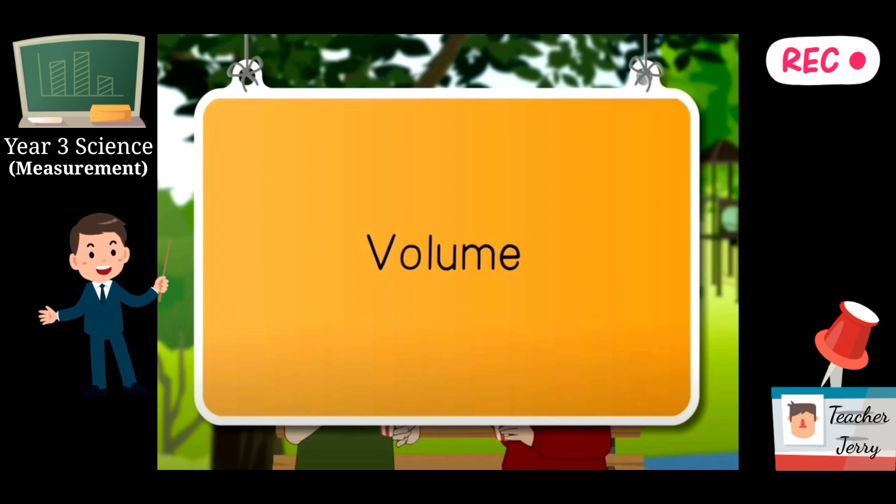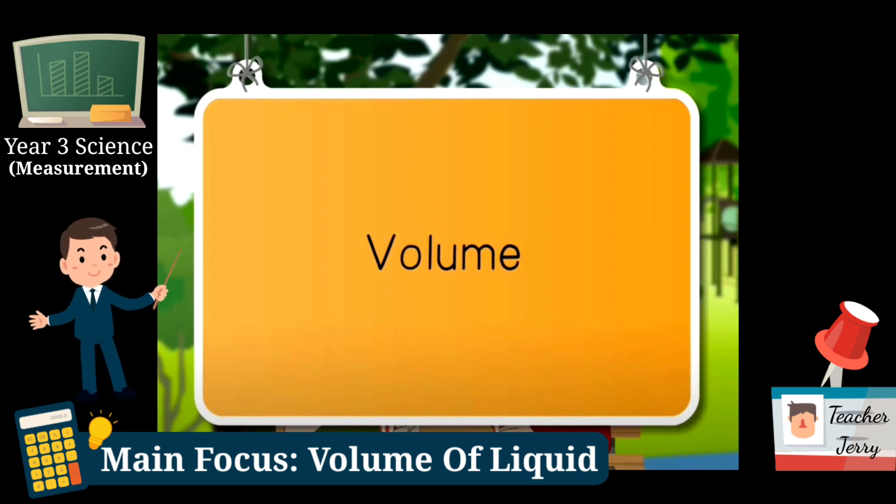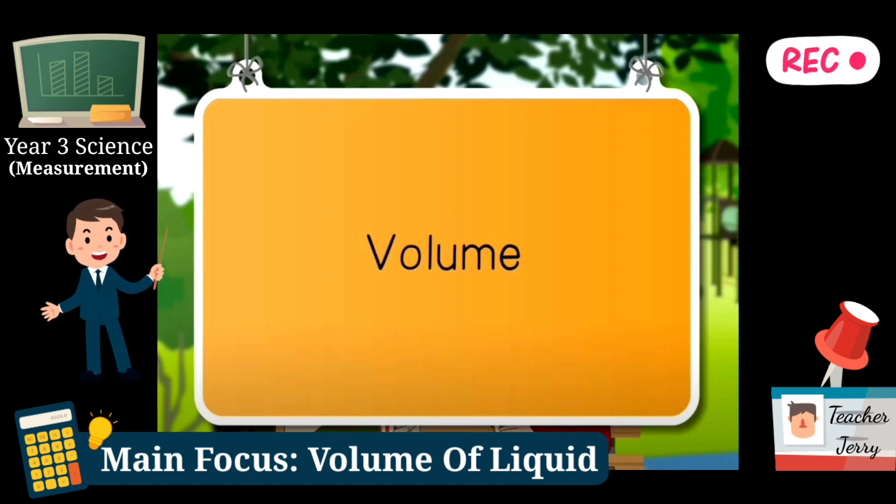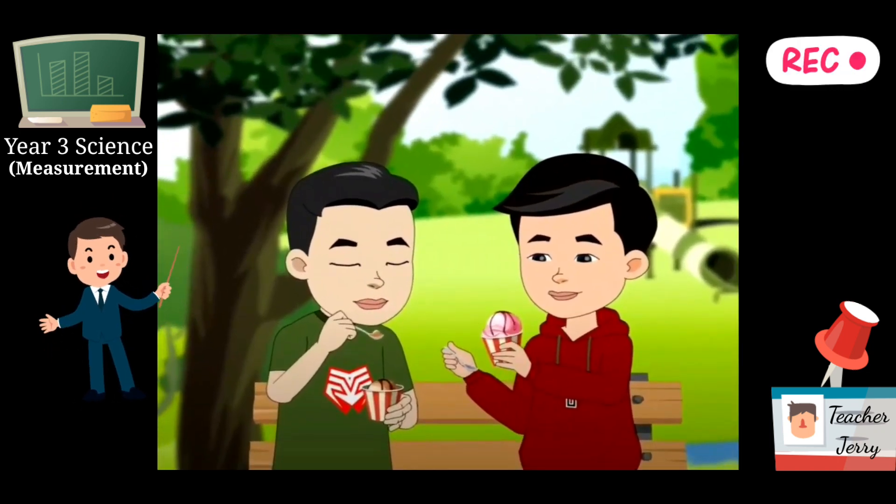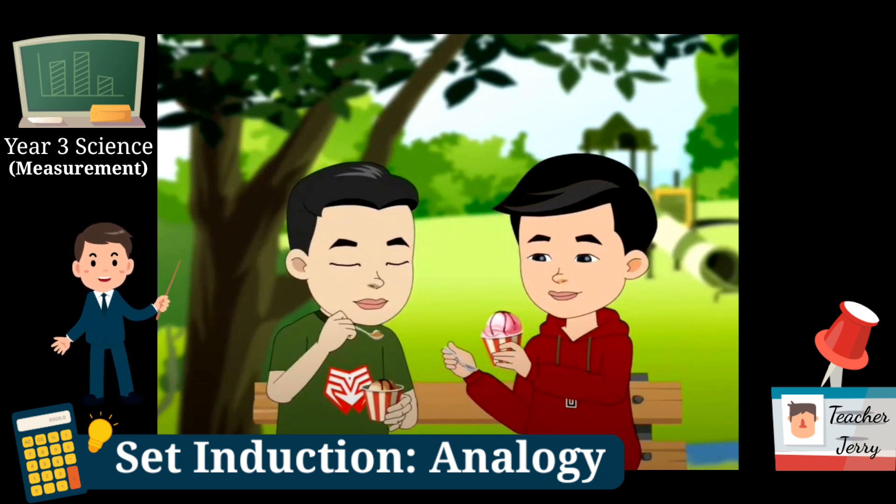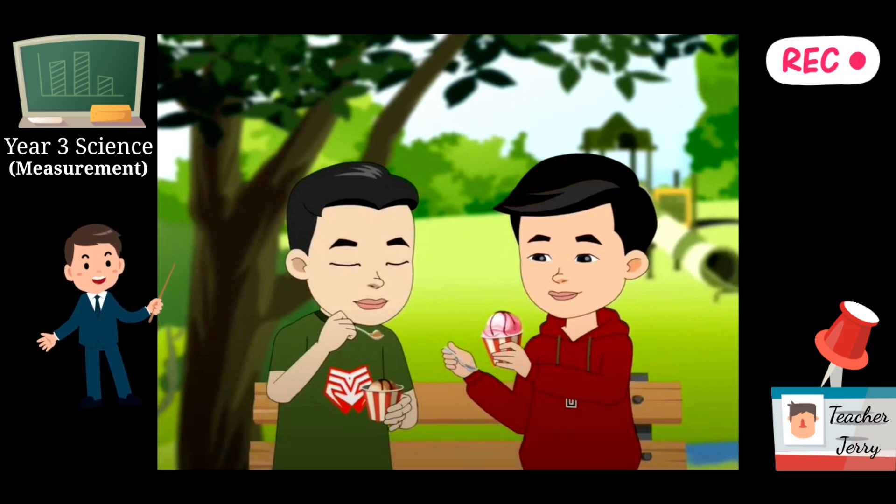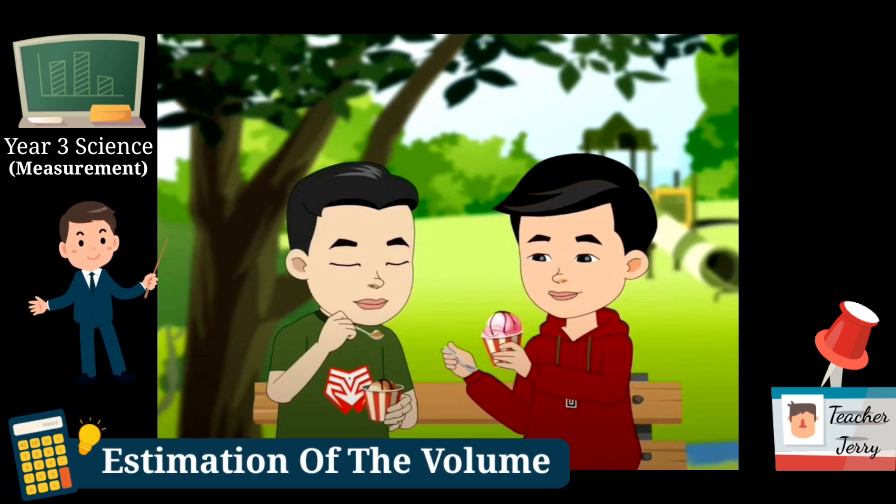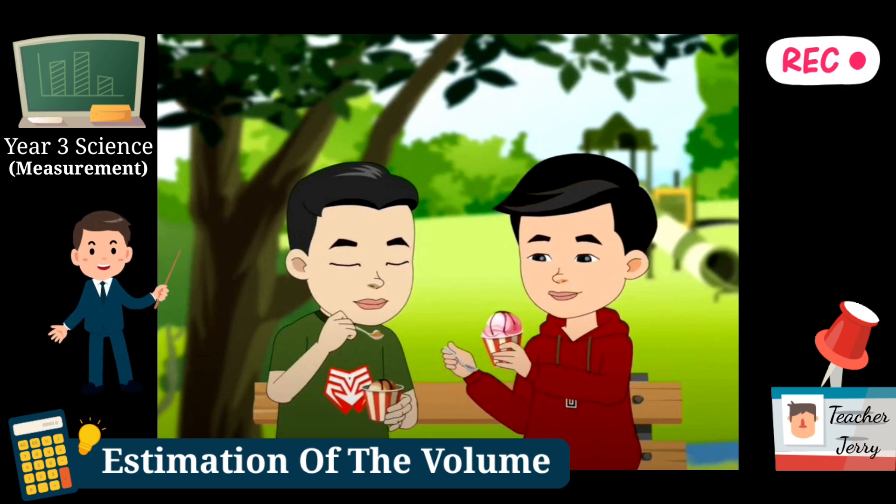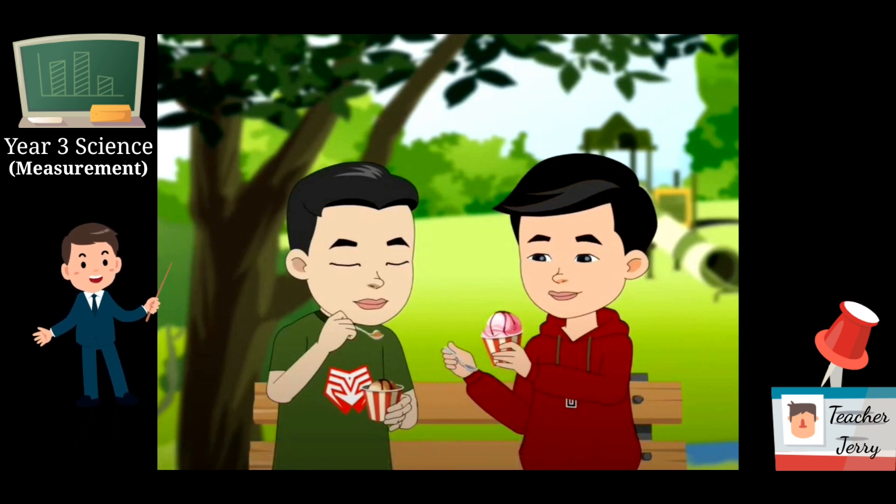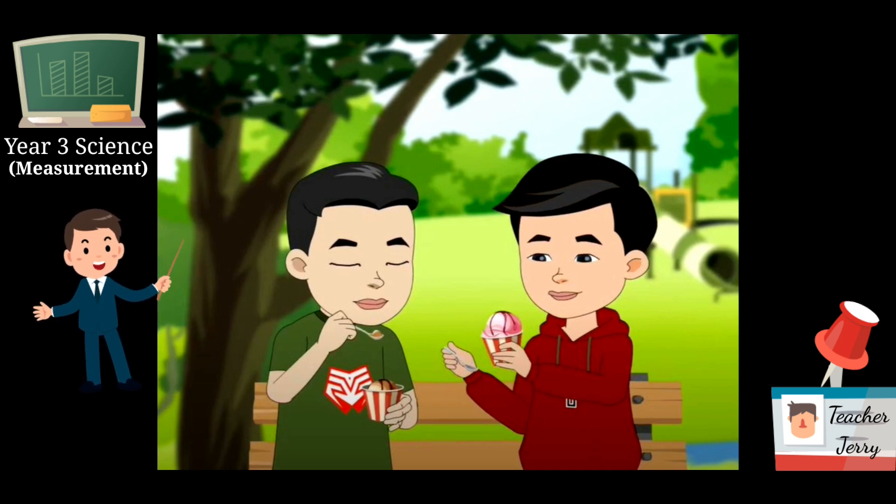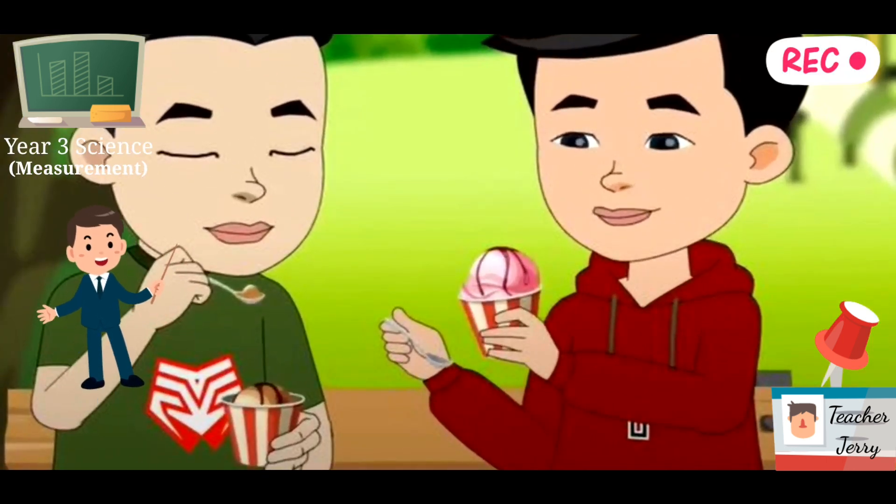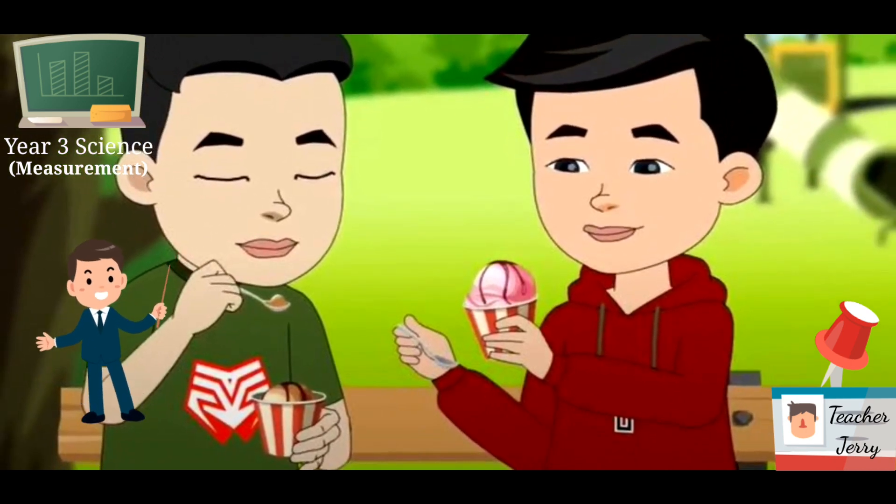For today we are going to touch about the volumes of a liquid - isi padu untuk air, untuk minuman. Before we start, I give you a very simple analogy based on these pictures. There are two boys in the pictures - the green shirt boy is Michael and the red jacket is Jeff. Michael and Jeff are good friends. One day Michael and Jeff went to a park and they bought two ice creams in a cup. Michael bought ice cream with a chocolate flavor and Jeff bought an ice cream with a strawberry flavor.